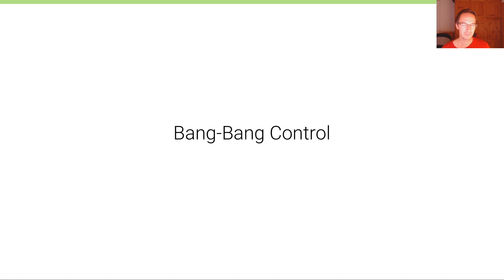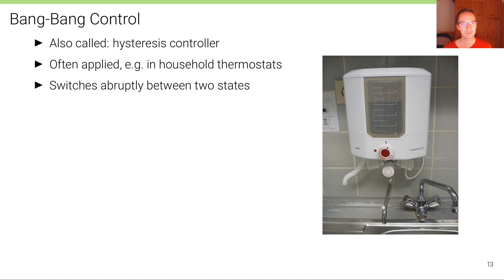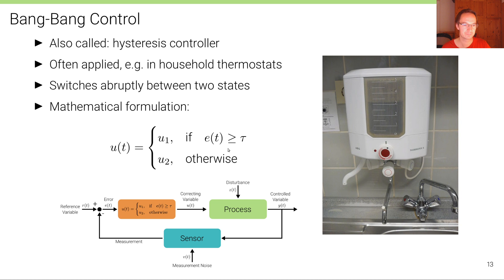The most simple form of a black box controller is called a bang-bang controller. A bang-bang controller is also called a hysteresis controller. It's often applied, for example, in household thermostats, and it's called a bang-bang controller because it switches abruptly between two states.